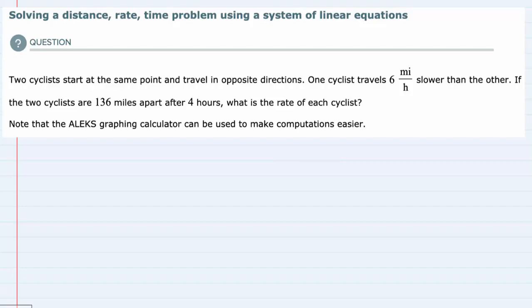The relationship that we have to keep in mind is that distance equals rate times time when the rate is constant. In this problem we see that two cyclists start at the same point and travel in opposite directions.